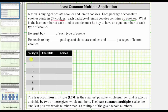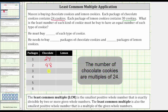So if Mason buys one package of chocolate cookies, there is one times 24, or 24 chocolate cookies. If he buys two packages, there are two times 24, or 48 chocolate cookies. If he buys three packages, there are three times 24, or 72 chocolate cookies. If he buys four packages, there are four times 24, or 96 chocolate cookies.